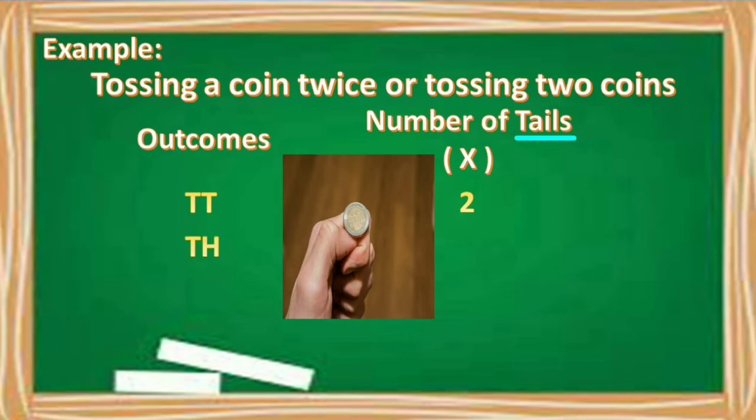Next outcome, tail, head. So what will be our value? One. Kasi meron tayong isang tail na lumabas. Next. Outcome is head, tail. So ang value pa rin natin dito ay one. Kasi meron pa rin isang tail na lumabas. At kung ang outcome natin ay head, head. Of course, our random variable is number of tails. Ang magiging value natin dito ay zero. Dahil walang tail na lumabas.